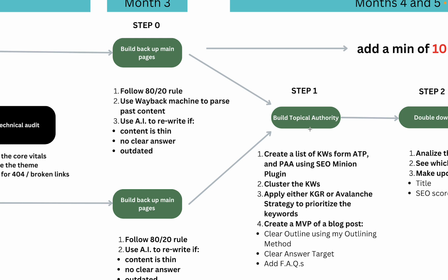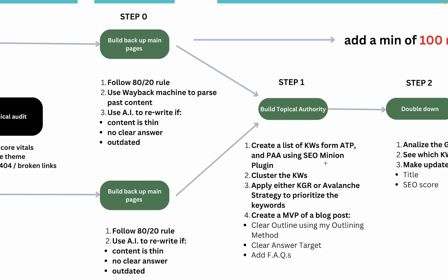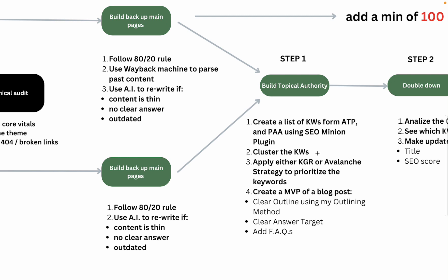Step one is to build topical authority. Many people argue that topical authority will be the decisive factor for rankings — Google wants to see that your website is an authority on a certain topic. To do that, first create a list of keywords using tools like Answer the Public, parse the 'people also ask' or related queries using the SEO Minion plugin, and you end up with a huge list of maybe a thousand keywords. Then cluster the keywords — you can do it manually, use free clustering tools online, use Keyword Cupid, or tools like Surfer SEO.